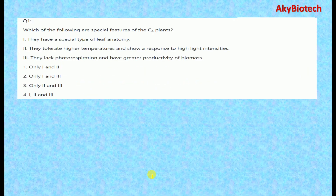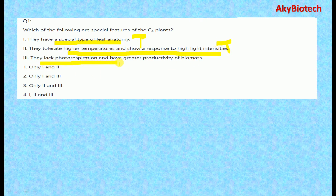Question one: which of the following are special features of C4 plants? The correct answer is all of the above — they have a special type of anatomy, they tolerate higher temperatures and show a response to high light intensities, and they lack photorespiration and have greater productivity of biomass. All three statements are true, so the correct option is the fourth, that all three statements are correct regarding C4 plants.